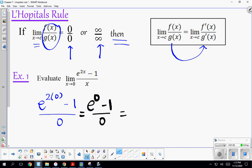2 times 0 is 0. Any number to the power of 0 is 1, and you can see that we get 0 over 0. This is called indeterminate form.